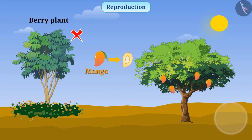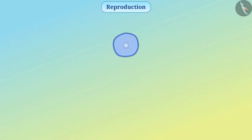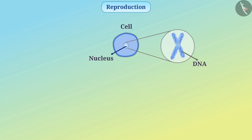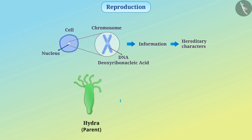The body of every organism is made up of cells that consist of a nucleus containing DNA. Every cell contains a nucleus which is made up of chromosomes. The chromosomes contain DNA — deoxyribonucleic acid — that contains information of hereditary characters transmitted from parent to offspring.